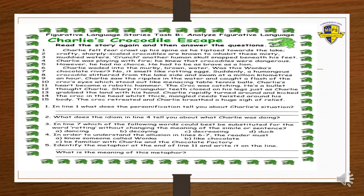The next question: what does the idiom in line four tell you about what Charlie was doing? The idiom tells us that what Charlie was doing was as dangerous or risky as playing with fire. Question number three: in line seven, which of the following words could best be substituted for the word 'rotting' without changing the meaning of the simile or sentence? Dancing, decaying, decreasing, or duck. The answer is 'decaying,' which means the same as 'rotting.'